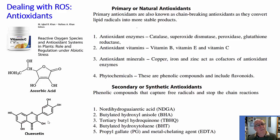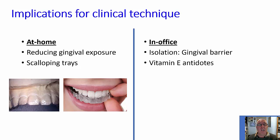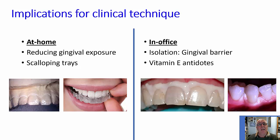There are also quite a few that are used synthetically, often as preservatives, for example in medicines or even in foods. The implications of reactive oxygen species for at-home bleaching is that we need to minimize contact of the gingival tissue with these ingredients. This involves scalloping the trays and removing the excess of the bleaching gel. In terms of in-office bleaching, we use a gingival barrier to protect the gingival tissues, the interdental papillae, and we use vitamin E as an antidote.